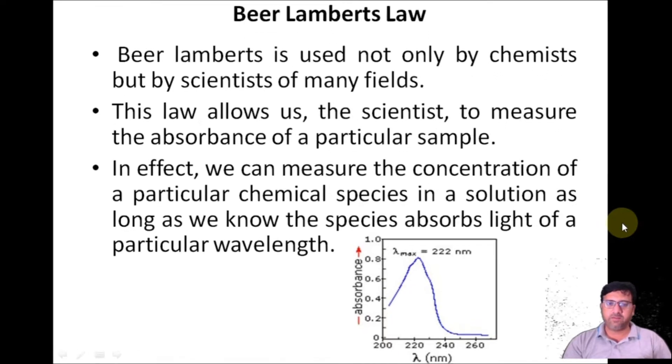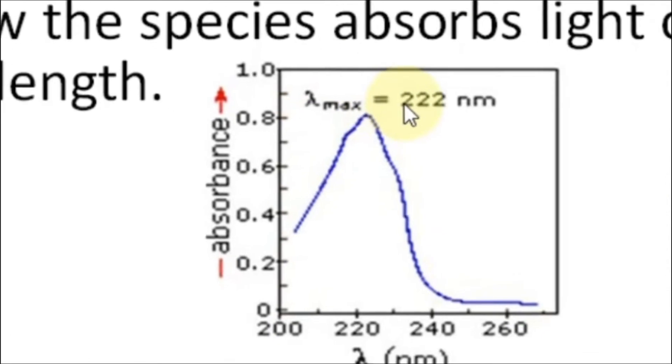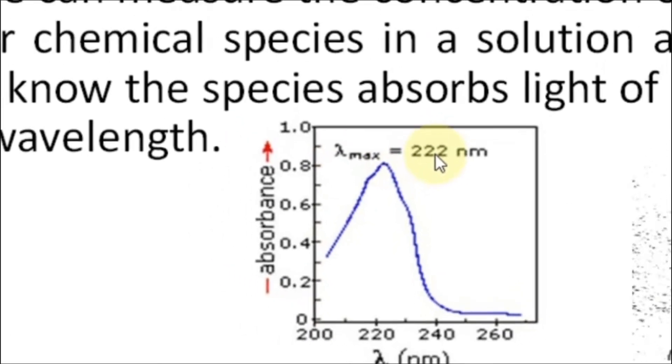At a particular wavelength that is known as lambda max. For example, you can see over here in a graph, the lambda max of our sample is 222 nanometer.